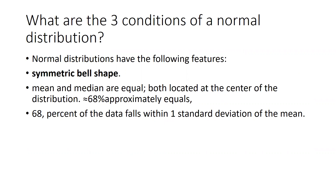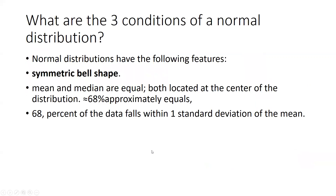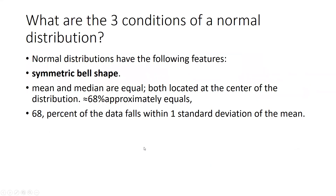Third condition: approximately 68% of the data falls within one standard deviation of the mean. If we move one standard deviation to the right and one standard deviation to the left (minus one), 68% of the data falls between both these boundaries. So mean and median are equal, and 68% of the data falls within one standard deviation.